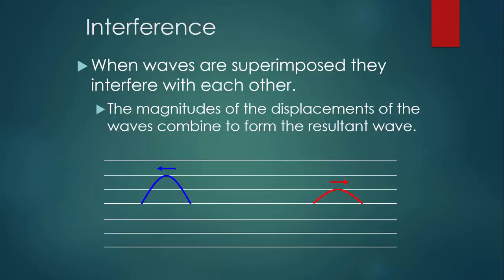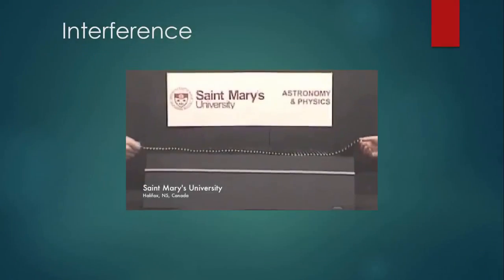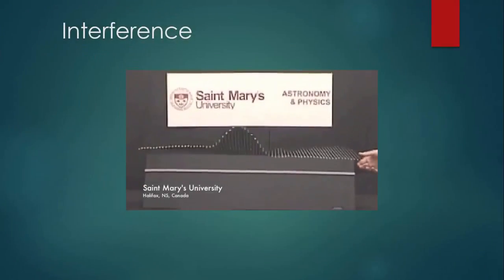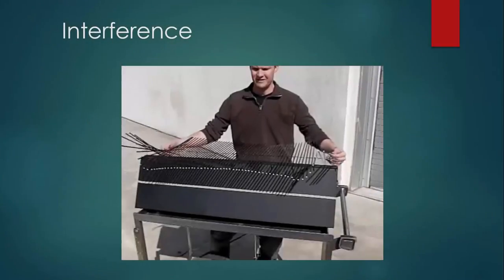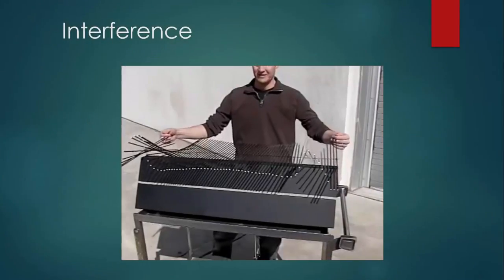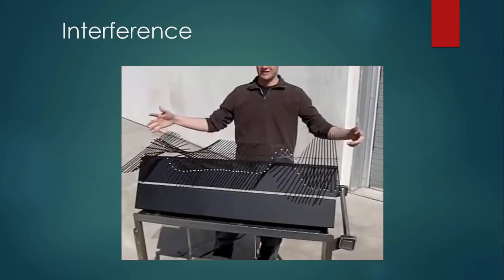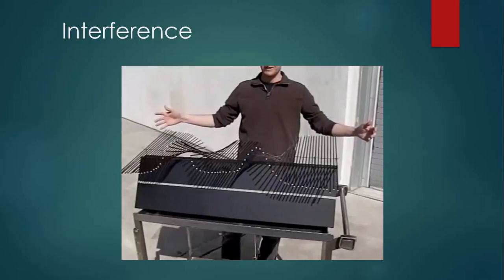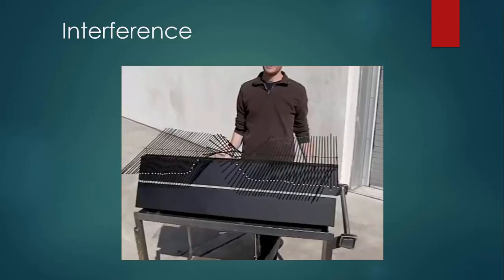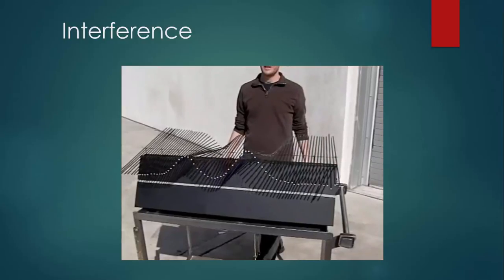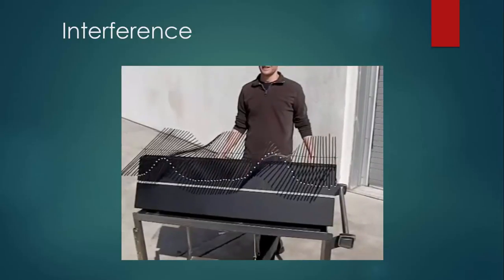Let's take a look at a couple of real-life examples. Here we have two pulses heading toward each other, and right there they interfere with each other to cause a taller pulse. Same thing here — two pulses with positive displacement heading toward each other, and when they get to the same place at the same time, they interfere with each other, combining their displacements to create one large pulse, and then they continue on their way.